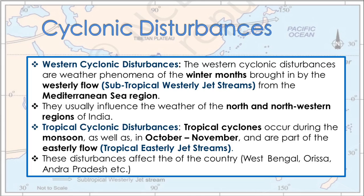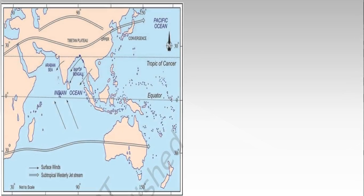They usually influence the weather of the north and northwestern region of India in winter. Tropical cyclones occur during the monsoon as well as in October-November and are part of the easterly flow known as the tropical easterly jet stream. These disturbances affect the coastal states of West Bengal, Odisha, Andhra Pradesh, etc. Look at the diagram.